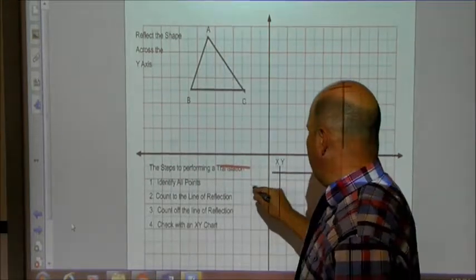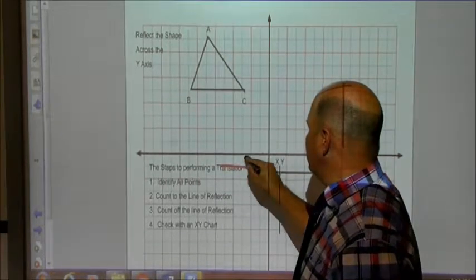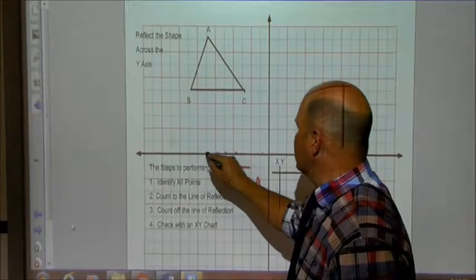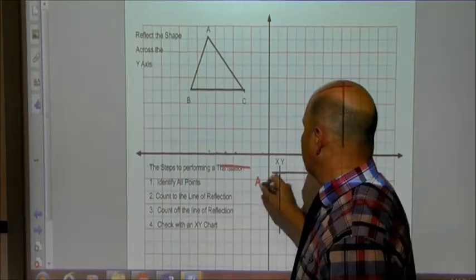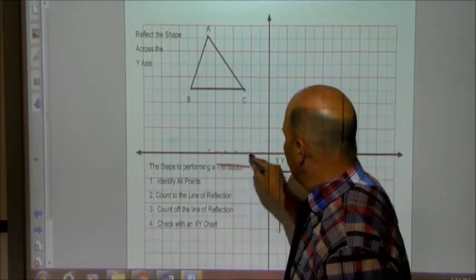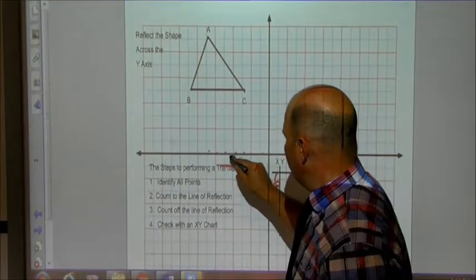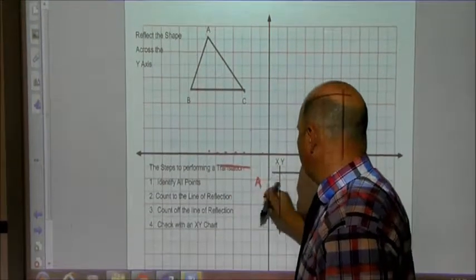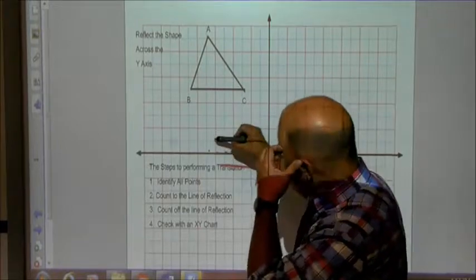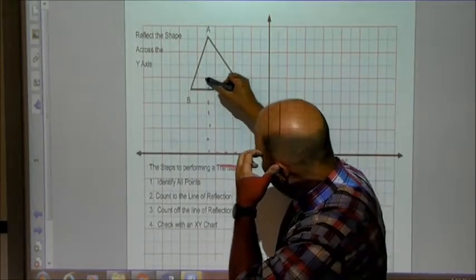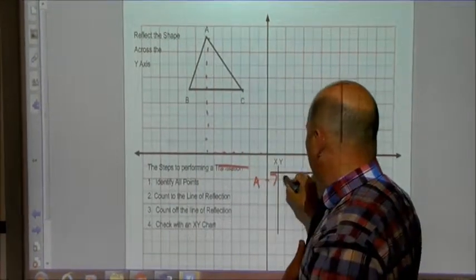Point A would be at 1, 2, 3, 4, 5, 6... negative 6... 3, 4, 5, 6, 7. It's actually negative 7, and it's up 1, 2, 3, 4, 5, 6, 7, 8, 9. So negative 7, 9.